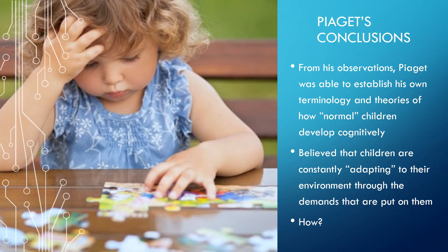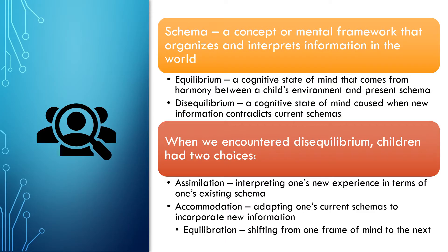This led Piaget to introduce some really critical terminology that's still with us today in cognitive development research and other areas of psychology. One of the terms he started to use a lot is the concept of something called a schema. Piaget insisted that when kids are trying to understand the world around them, what they're really trying to do is develop these mental frameworks — these ideas about how different elements of the world exist for us. He said we have schemas for things like gravity, what makes a bird a bird, how to walk, and how to interact with people in specific situations.